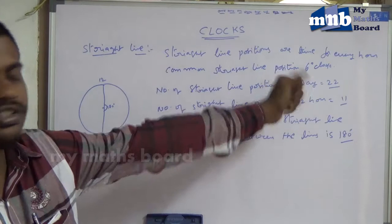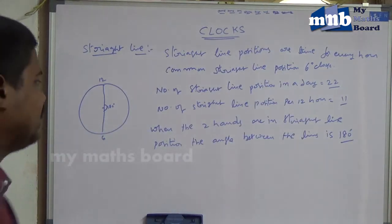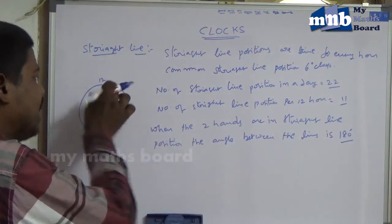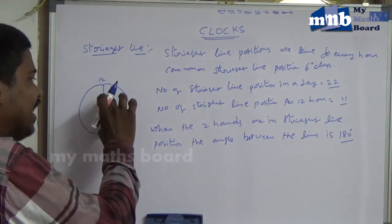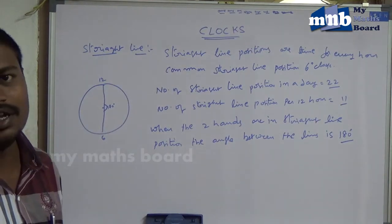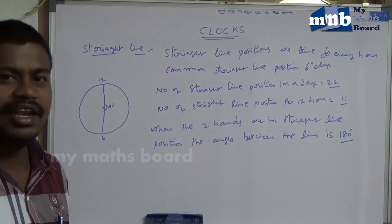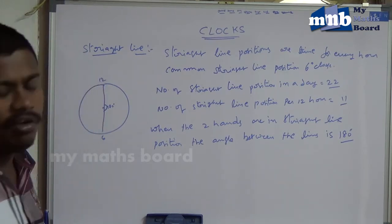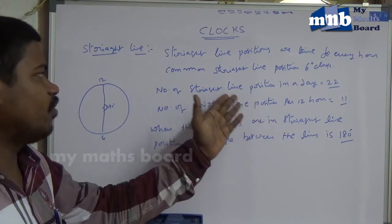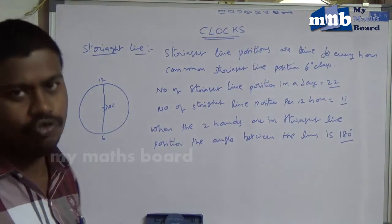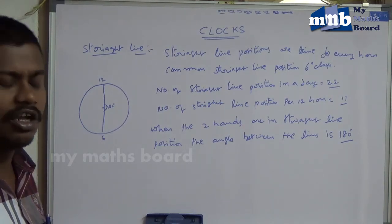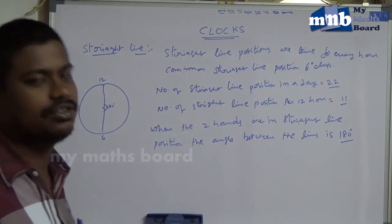In summary: the number of straight line positions per day is 22. The straight line position means when the two hands are in the same straight line and the angle between them is 180 degrees. The number of straight line positions per 12 hours is 11, and the common straight line position is 6 o'clock.